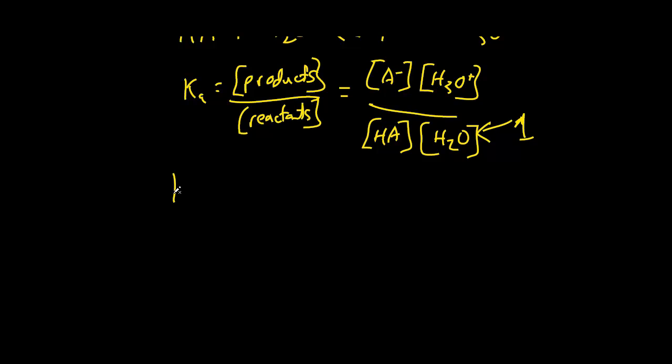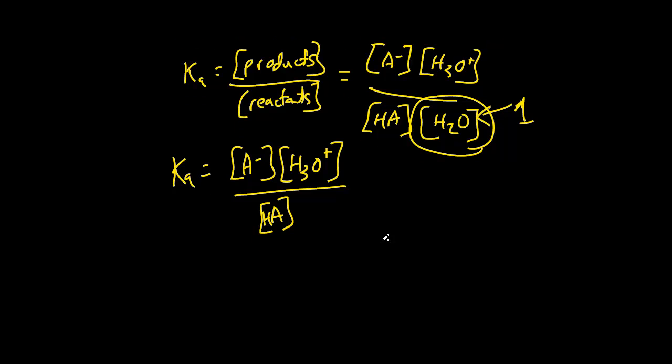So, I'm going to say Ka equals A- times H3O+ over HA. And if you're still confused about that part, that's okay. Just keep in mind that we canceled out this water because since we're already dissolving all this in the water, you don't really need to include it. So, this is our equation for acid ionization constant.